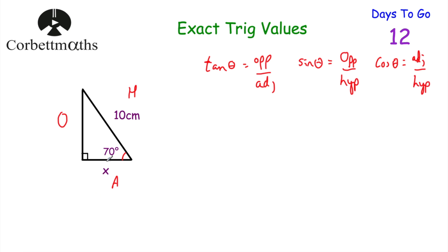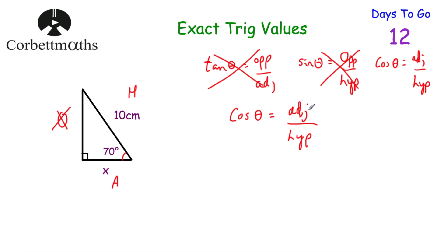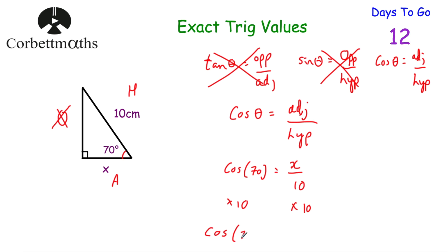The tan of the angle equals opposite divided by adjacent. The sine of the angle equals opposite divided by hypotenuse. The cos of the angle equals adjacent divided by hypotenuse — or SOH CAH TOA. We're trying to find the adjacent, and we've been given 10 centimetres for the hypotenuse. We cross off the opposite and any ratio using it, so we use cosine. The cos of 70 degrees equals x divided by 10, so multiplying both sides by 10 gives us x equals cos(70°) × 10, which is 3.42 centimetres to two decimal places.